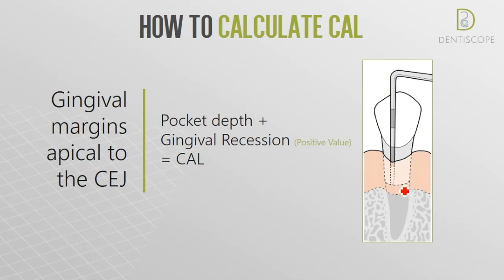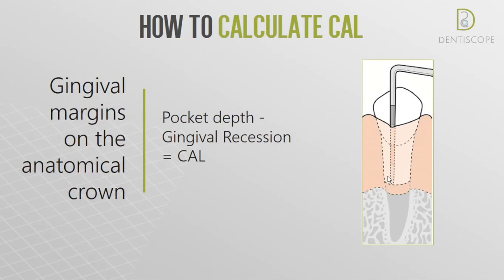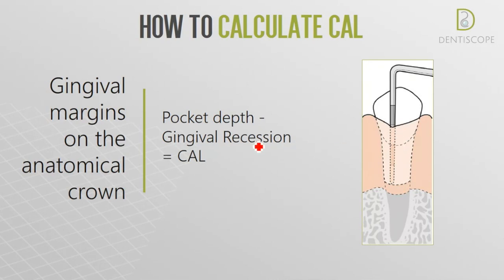For the last case, we have the gingival margin lying on the anatomical crown — this is when we have gingival overgrowth. We need to measure the pocket depth from the gingival margin to the junctional epithelium, and then subtract the gingival overgrowth (the negative gingival recession) from the margin to the cemento-enamel junction. This gives us the clinical attachment loss. This one is quite tricky because it's hard to find or feel the cemento-enamel junction in some cases.